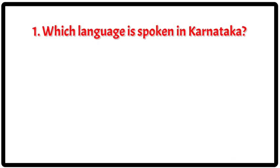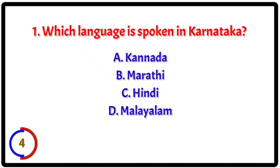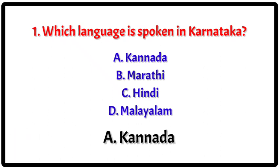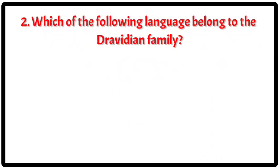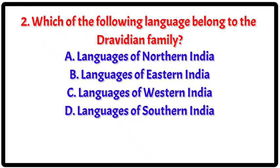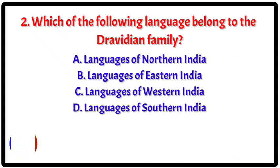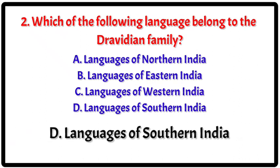Question 1: Which language is spoken in Karnataka? The correct answer is A — Kannada. Question 2: Which of the following languages belongs to the Dravidian family? The correct answer is D — languages of Southern India.